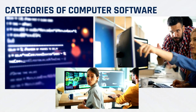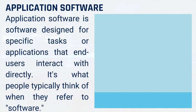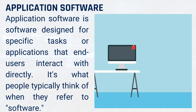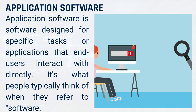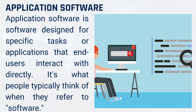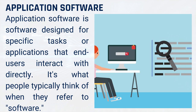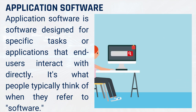The categories of computer software are: 1. Application software — software designed for specific tasks or applications that end users interact with directly. It's what people typically think of when they refer to software.